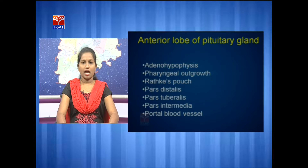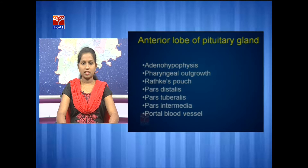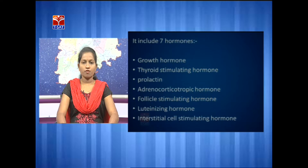The anterior lobe is also called the adenohypophysis — hypophysis means pituitary. This anterior lobe is the outgrowth of the pharynx, known as Rathke's pouch. It has pars distalis, pars tuberalis, and pars intermedia. Pars tuberalis and pars distalis unite to form the anterior lobe, whereas pars intermedia forms the intermediate lobe between the anterior and posterior lobes. The hypothalamic capillaries unite to form a portal blood vessel, which carries hormones to the anterior lobe.